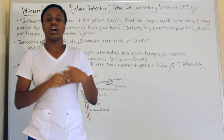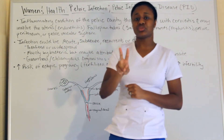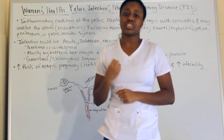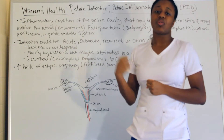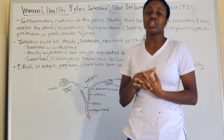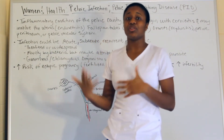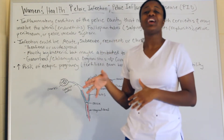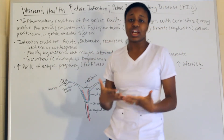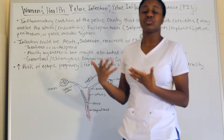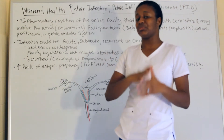The main two organisms that cause pelvic inflammatory disease are gonorrhea and chlamydia. Those are the most common causes. Just because a woman has PID doesn't necessarily mean she has gonorrhea or chlamydia — there are other causes — but those organisms are the most common reason.